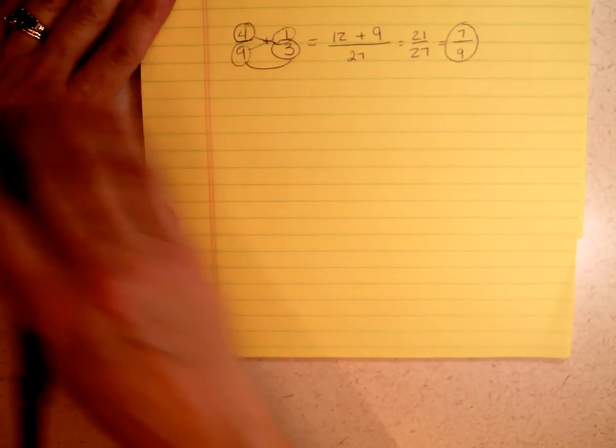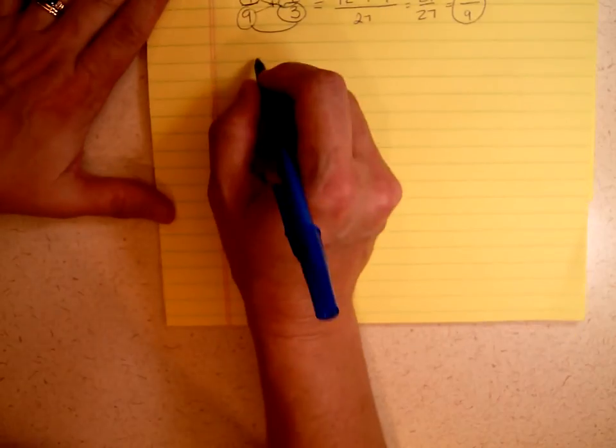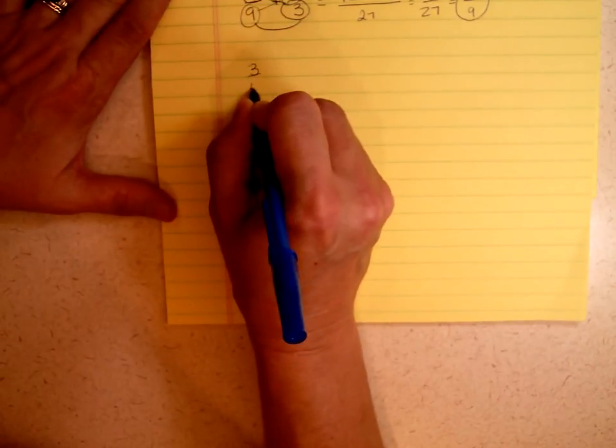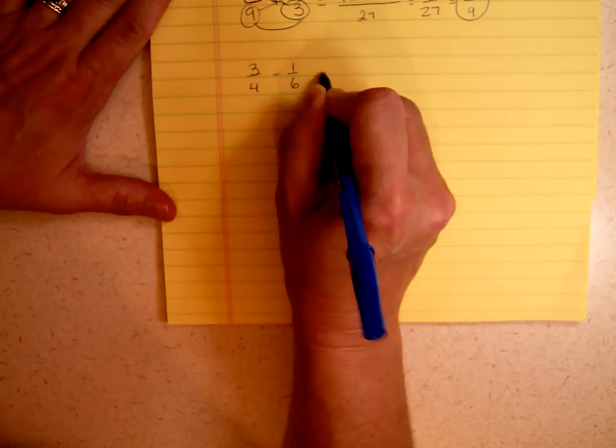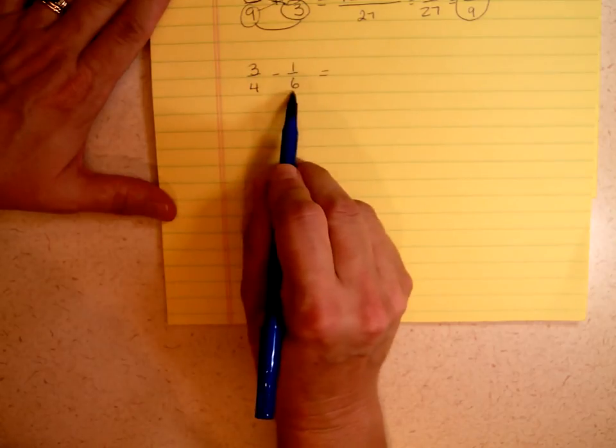Again, this method works exactly the same if you're subtracting. If I have 3 quarters minus 1 sixth, I'm going to look at the 6 and the 4 and say, hmm.